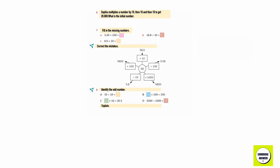Sophia multiplies a number by 10, then again by 10, and then again by 10. Her answer is 20,000. What number did she start with? The answer is 20.